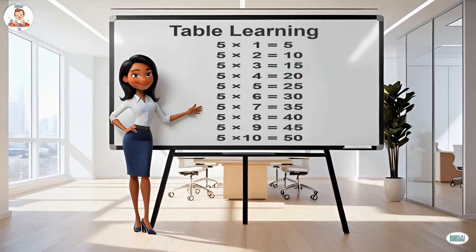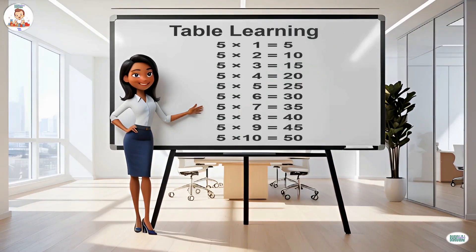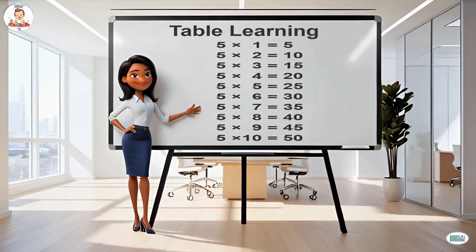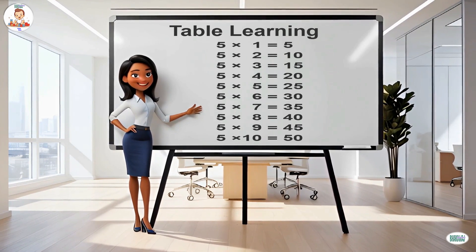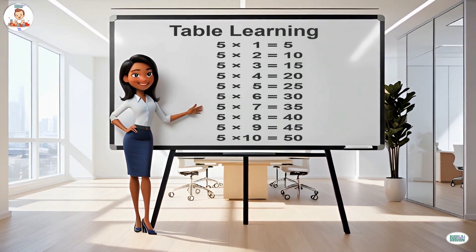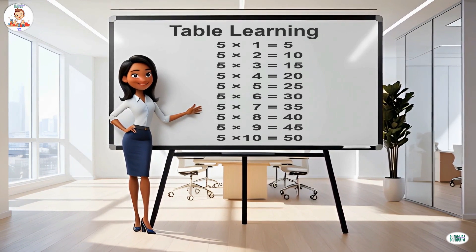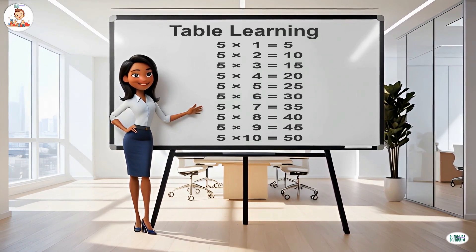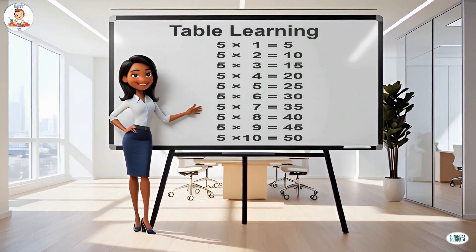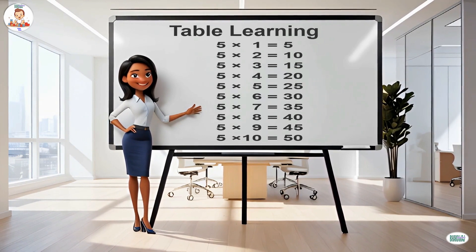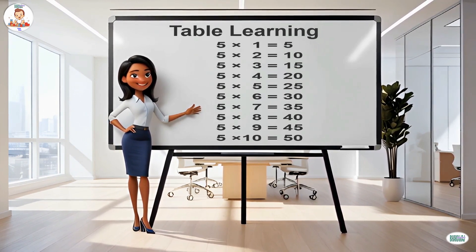Five ones are five, five twos are ten, five threes are fifteen, five fours are twenty, five fives are twenty-five, five sixes are thirty, five sevens are thirty-five, five eights are forty.